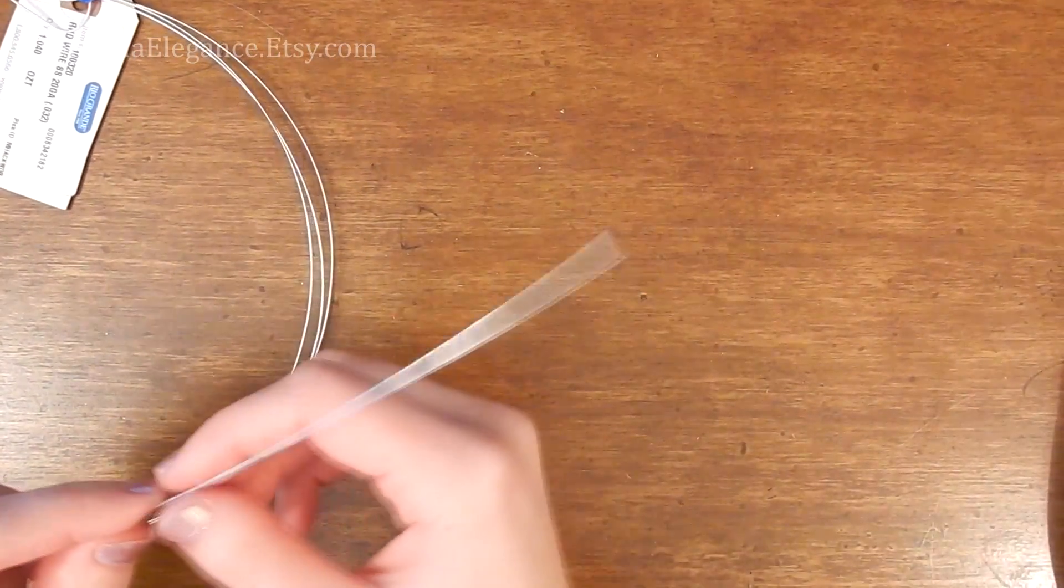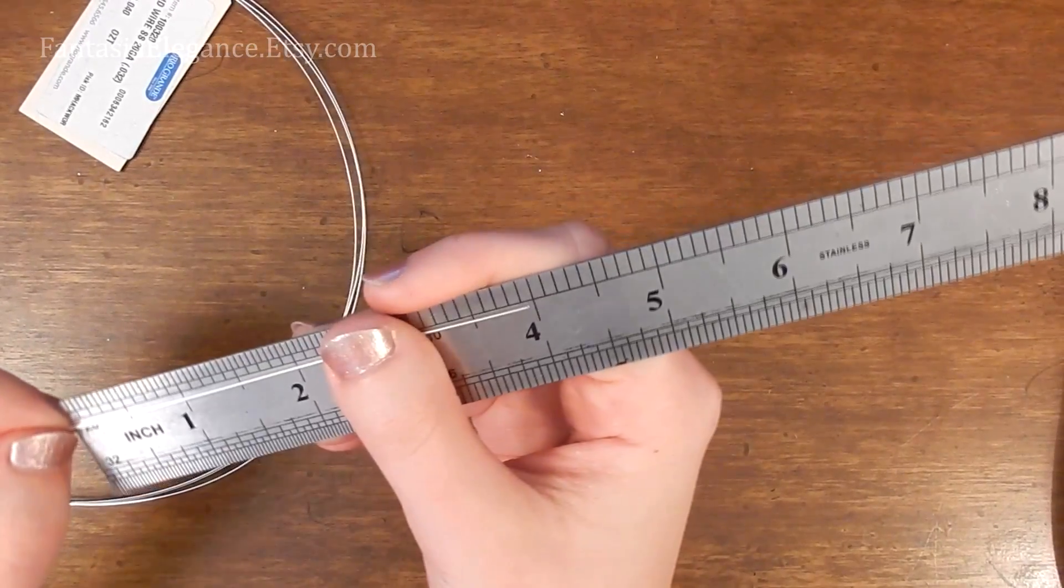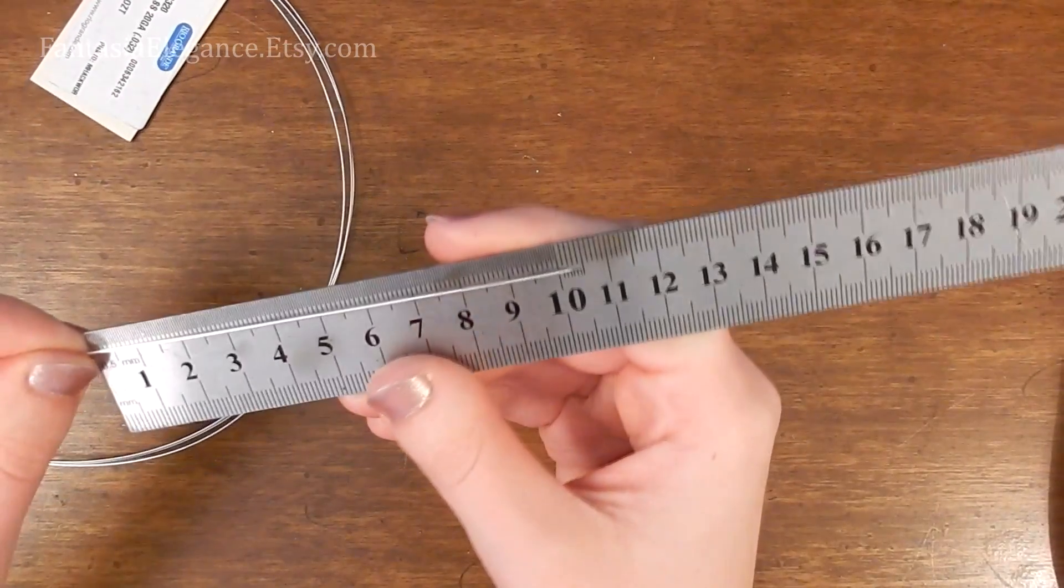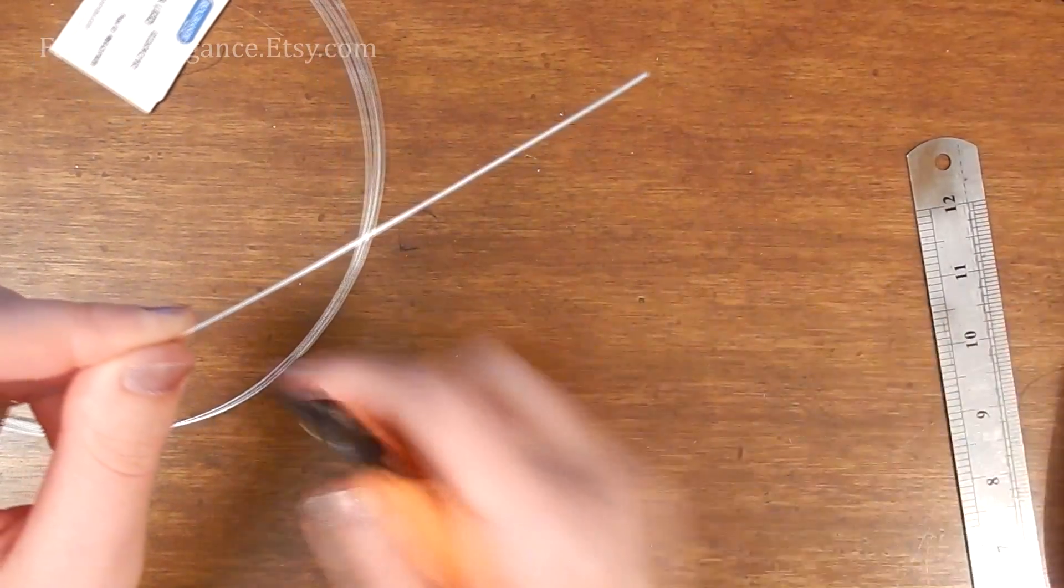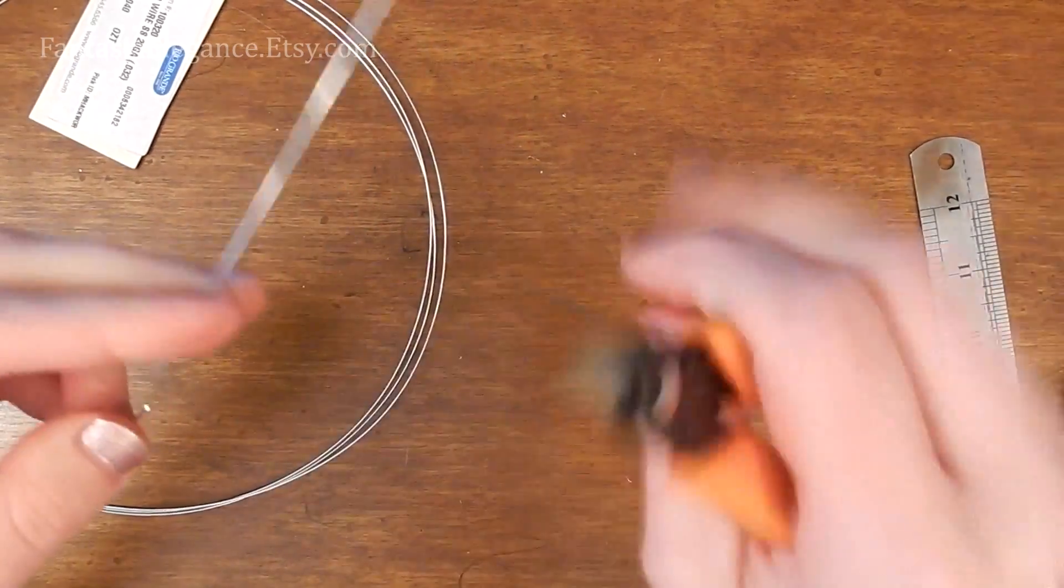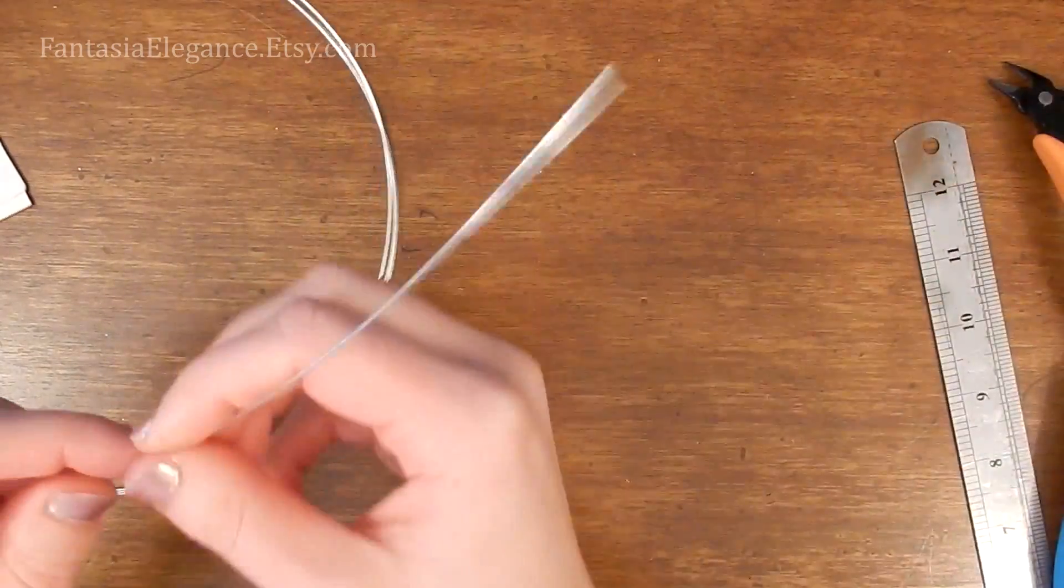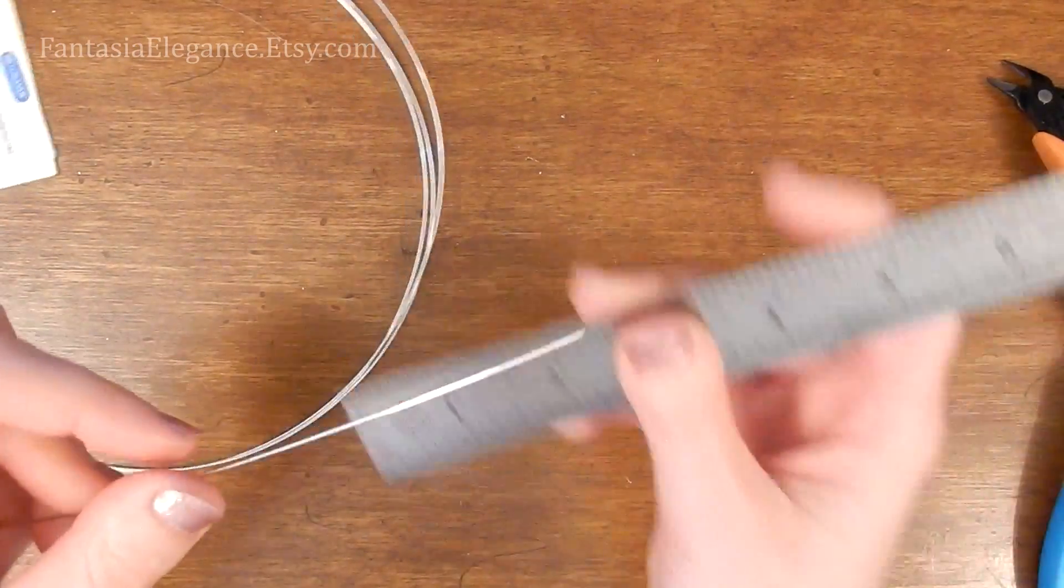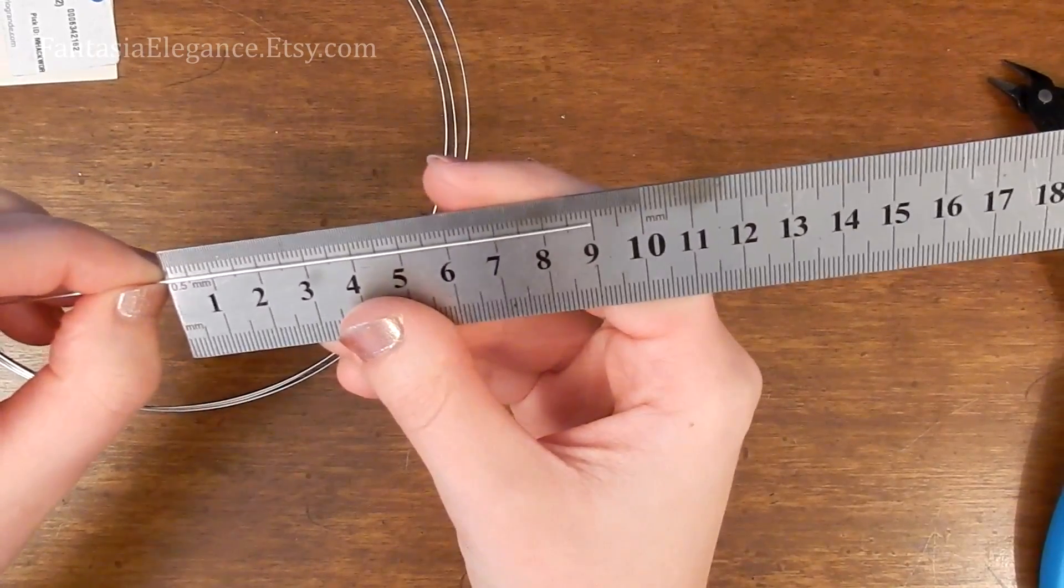So with our 20 gauge round dead soft wire, we're going to cut a four inch piece for the hook portion. And that is about 10.2 centimeters. And then for the loop portion, we're just going to cut a three and a half inch piece or nine centimeters.